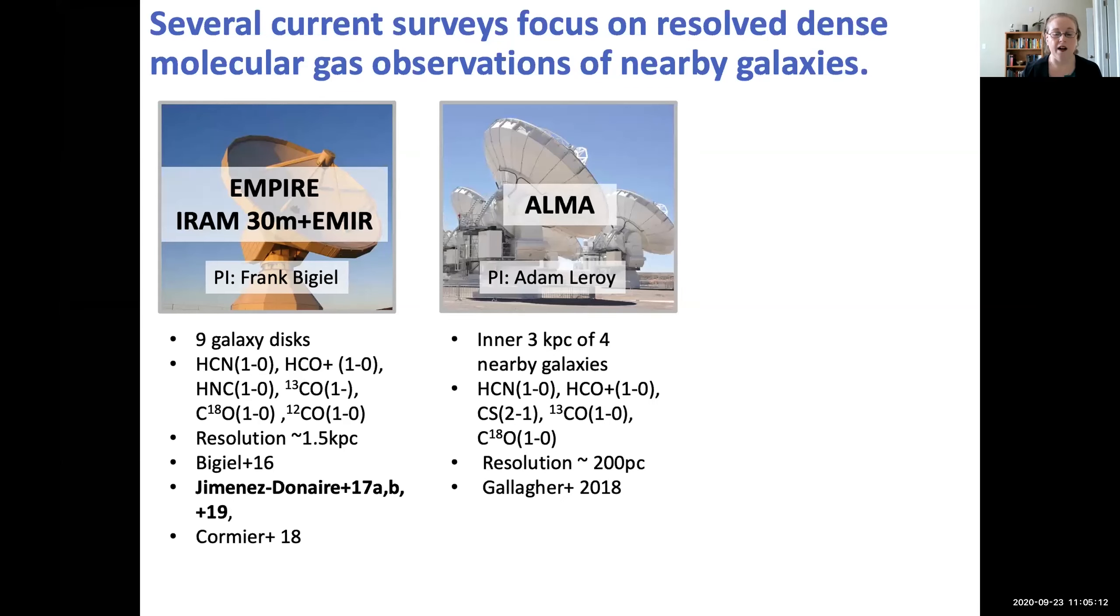And on the other end of the scale, there's some observations with ALMA. The PI was Adam Leroy. And the paper is Gallagher 2018. These observations had a resolution of 200 parsecs, but they were only able to do the inner three kiloparsecs of four galaxies. So they weren't able to get as large a sample size.